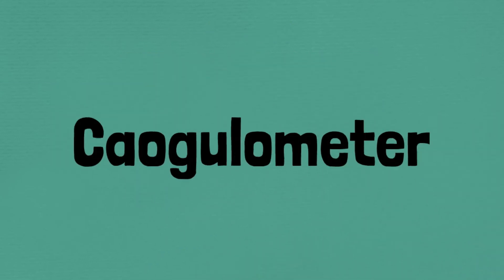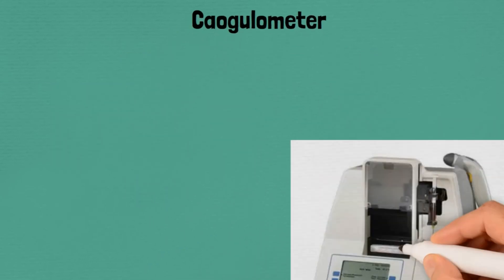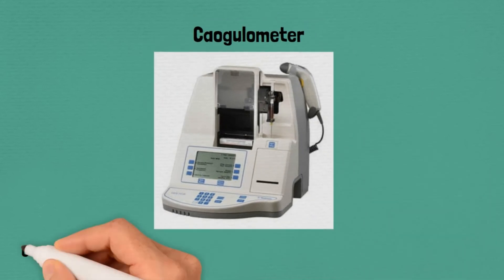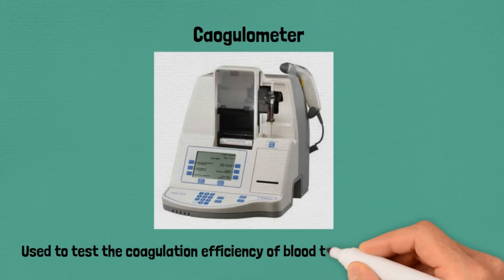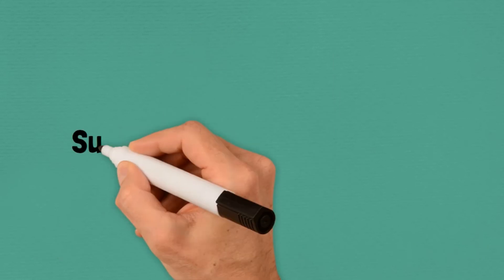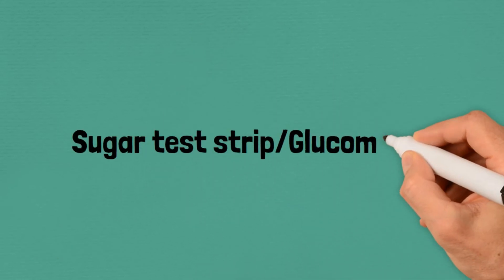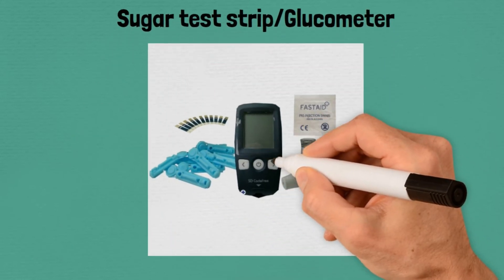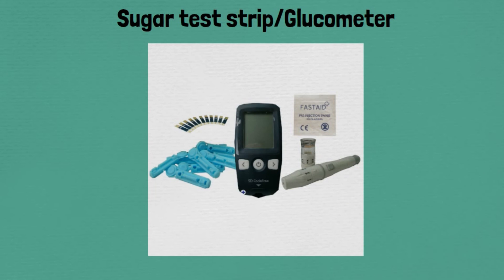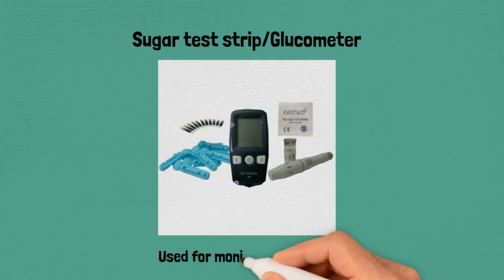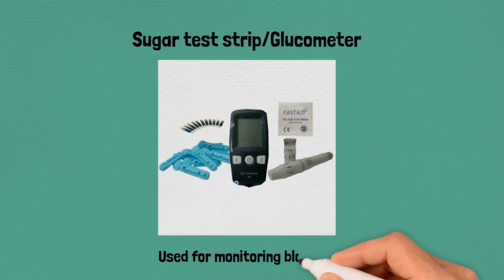Coagulometer, used to test the coagulation efficiency of blood and to assess bleeding disorders. Glucometer, used for monitoring blood sugar levels.